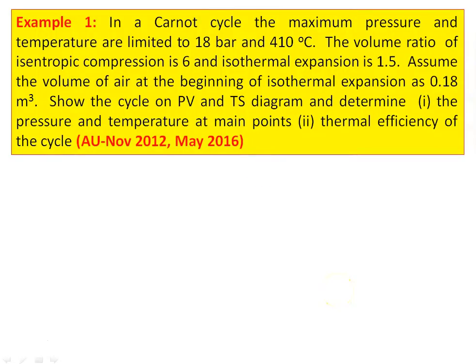As usual, we take problems only from the Anna University question paper for the confidence of the students. This is from the Anna University question paper, November 2012 and May 2016, example number 1. In a Carnot cycle, the maximum pressure and temperature are limited to 18 bar and 410 degree Celsius. The volume ratio of isentropic compression is 6 and isothermal expansion is 1.5. Assume the volume of air at the beginning of the isothermal expansion is 0.18 meter cube. Draw the cycle on the PV and TS diagram, determine the pressure and temperature at the main points and the thermal efficiency of the cycle.